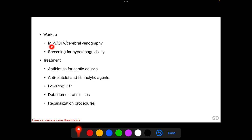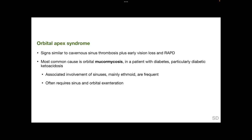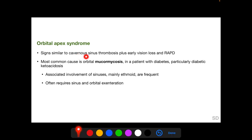Workup includes magnetic resonance venography, CT venography, or cerebral venography, and screening for hypercoagulable disorders. Treatment includes antibiotics for septic causes, antiplatelet and fibrinolytic agents, lowering intracranial pressure, debridement of sinuses, and recanalization procedures. Orbital apex syndrome has a similar presentation to cavernous sinus thrombosis but additionally has second cranial nerve involvement with vision loss and a relative afferent pupillary defect.